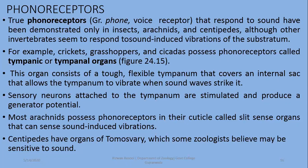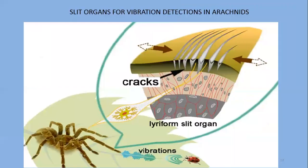Most arachnids possess phonoreceptors — sound receptors — in their cuticle. Arachnids include spiders, mites, and ticks. These are called slit organs, which can sense sound-induced vibrations. Centipedes also have specific structures — the organs of Tömösváry — which are believed to be concerned with sound detection.